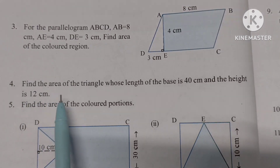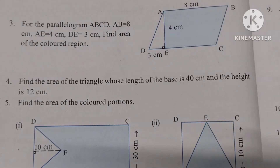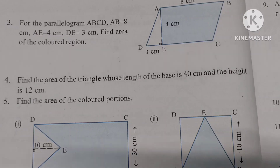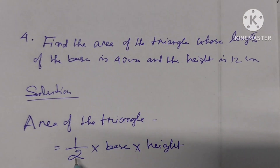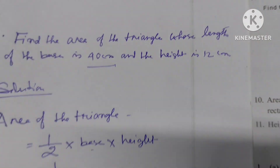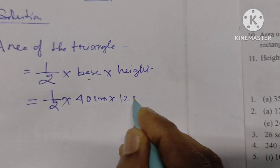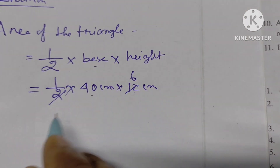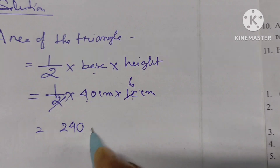Question number 4: Find the area of the triangle whose length of the base is 40 centimeters and the height is 12 centimeters. The formula is half into base into height. Base = 40 centimeters, height = 12 centimeters. Dividing 12 by 2 gives 6; then 40 × 6 = 240 square centimeters.